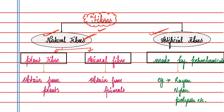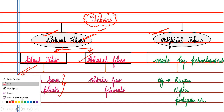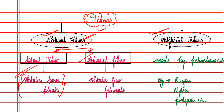Plant fiber falls into two categories, and there are also synthetic fibers which are obtained from petrochemicals.